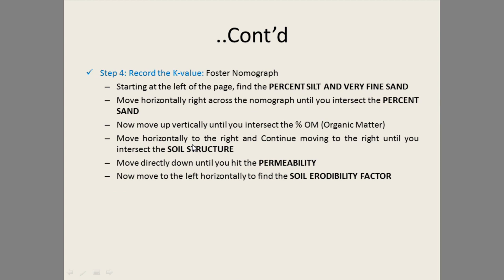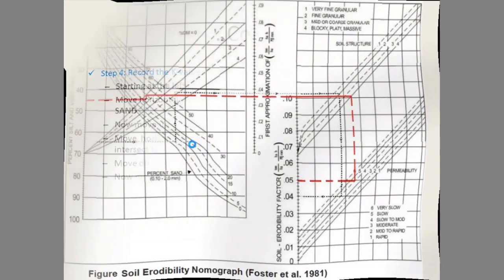The final step is to read the K values using the Foster et al. nomograph. First, find the percent silt and very fine sand content on the left side and move horizontally right until intersecting the percent sand line. Then move vertically up or down until intersecting the percent organic matter line. Then move horizontally to the right until intersecting the soil structure line. Then move directly down until intersecting the permeability class line.